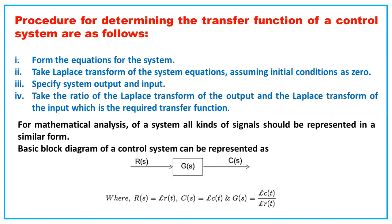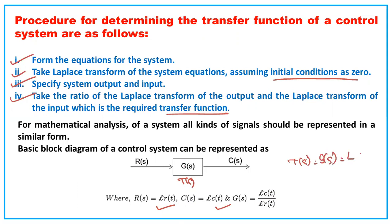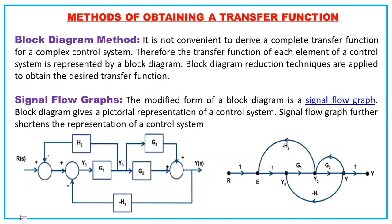For an open loop system with R(s), G(s), and C(t): R(s) is the Laplace transform of r(t), C(s) is the Laplace transform of c(t), and T(s) = G(s) = Laplace transform of c(t) divided by Laplace transform of r(t) = C(s)/R(s).